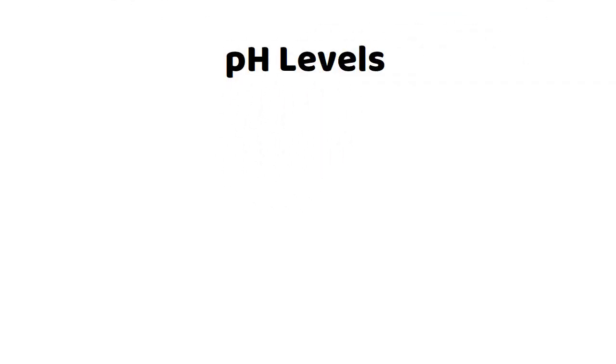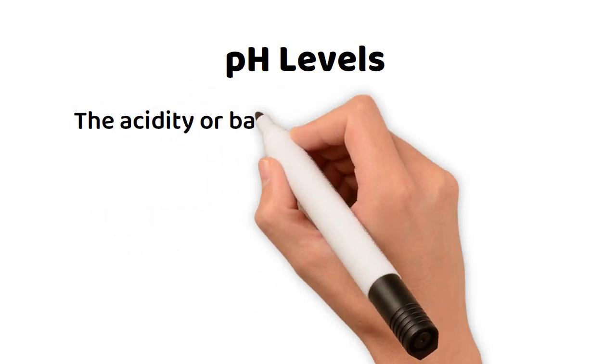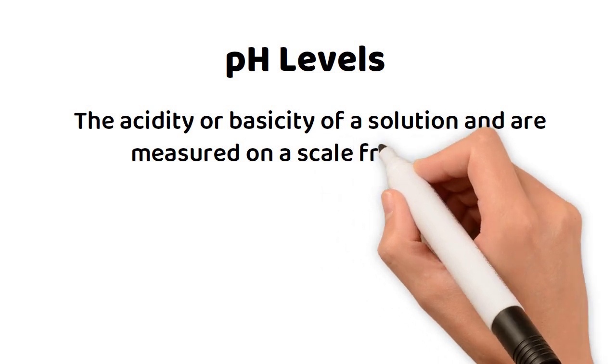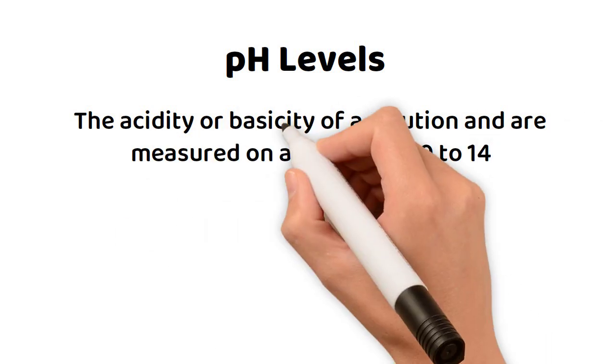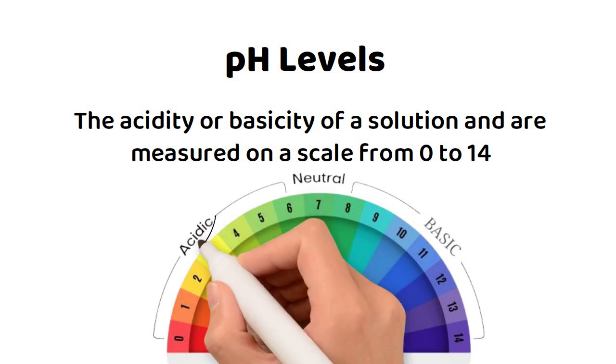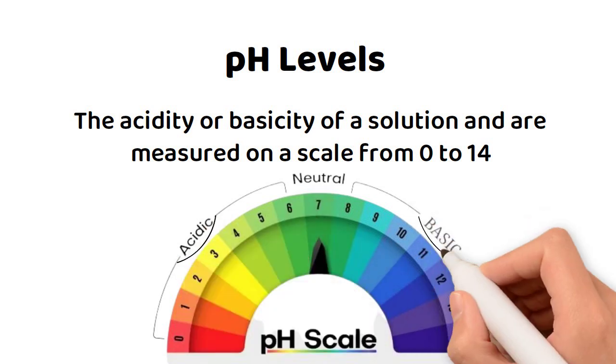pH levels refer to the acidity or basicity of a solution and are measured on a scale from 0 to 14. A pH of 7 is neutral, a pH below 7 is acidic, and a pH above 7 is basic.